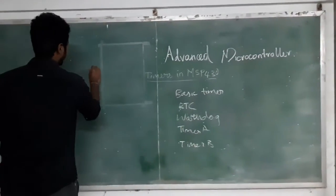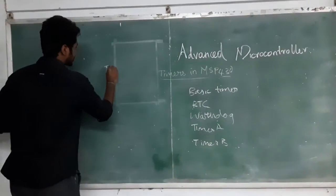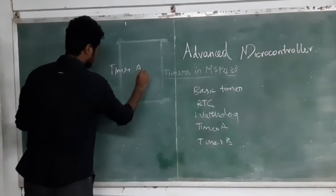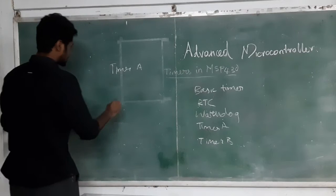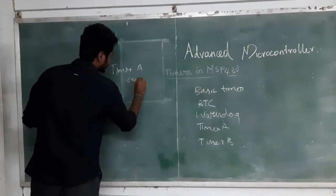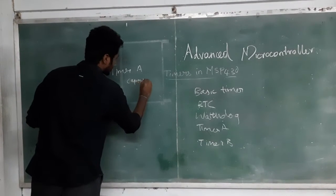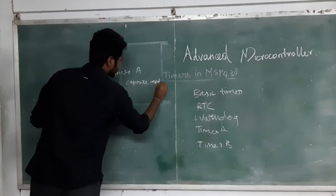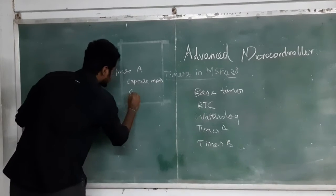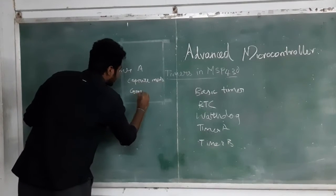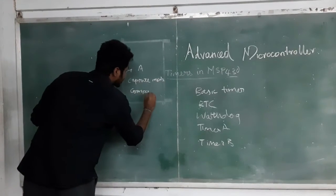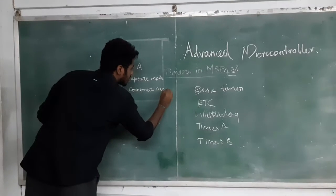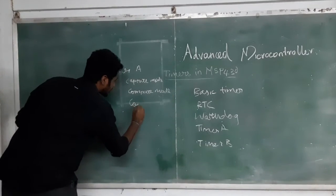In timer A there are 3 modes: capture mode, compare mode, and count mode.